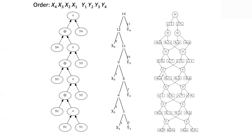Later work extended this result further: people proved an exponential separation between SDDs and OBDDs in general, showing that whatever variable order you use, the right-linear v-tree will always lead to blow-up for this function class, but some other v-tree will give a linearly-sized SDD. This demonstrates that SDDs are exponentially more compact than OBDDs for certain functions.